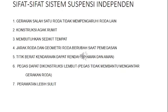Sifat-sifat sistem suspensi independen: yang pertama, gerakan salah satu roda tidak mempengaruhi roda lain. Yang kedua, konstruksinya agak rumit. Yang ketiga, membutuhkan sedikit tempat. Yang keempat, jarak roda dan geometri roda berubah saat pemegasan. Yang kelima, titik berat kendaraan dapat rendah atau nyaman dan aman. Yang keenam, pegas dapat dikonstruksi lembut. Yang ketujuh, perawatan lebih sulit.